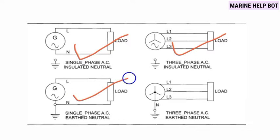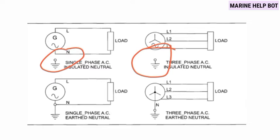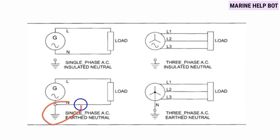In the single phase insulated system and three phase insulated system, the neutral is insulated. But in the earth neutral system, the neutral is earthed. This is the main difference between both systems.